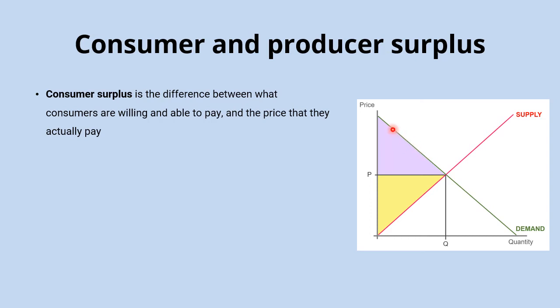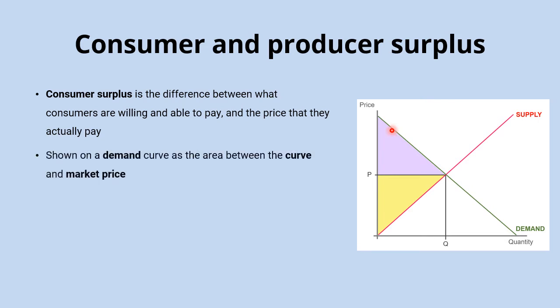Some of those consumers would have been willing to pay a really high price, but in most markets with no ability to price discriminate, you get a single market price that is charged. Those consumers who would have been willing to pay more are made up of the section of the demand curve above that price line, giving us the area between the demand curve and the price line — that is the area of consumer surplus.